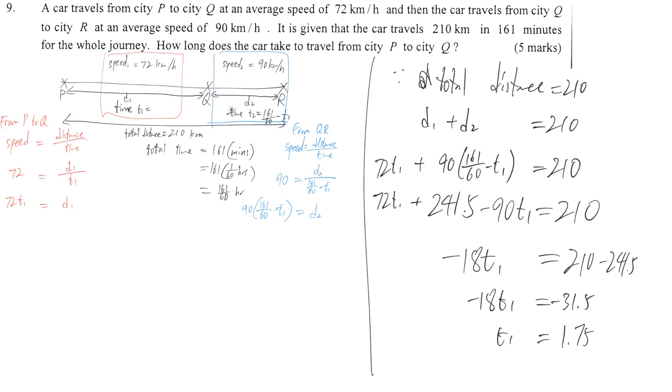So we know that T1 is 1.75. That means the time span from here to here is 1.75. So the question is asking how long does the car take to travel from City P to Q. So we may answer it is 1.75 hours.